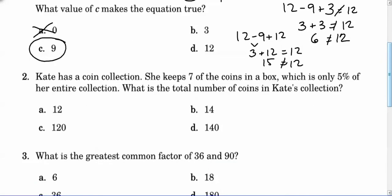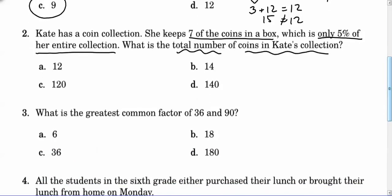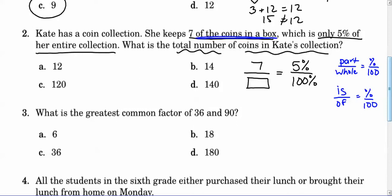Kate has a coin collection. She keeps 7 of the coins in a box, which is only 5% of her entire collection. What is the total number of coins in Kate's collection? We have a part-to-whole relationship here. We have 7 out of an unknown number, and we know that's 5%. We know percents are out of 100. So we're going to write that ratio: 7 out of an unknown number equals 5% out of 100%. Part over whole equals percent out of 100.